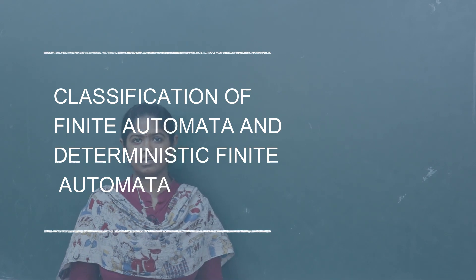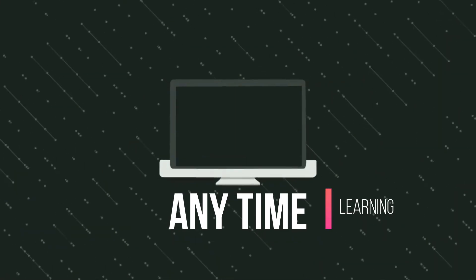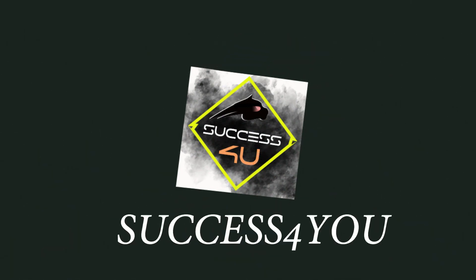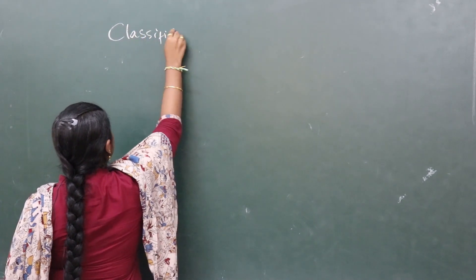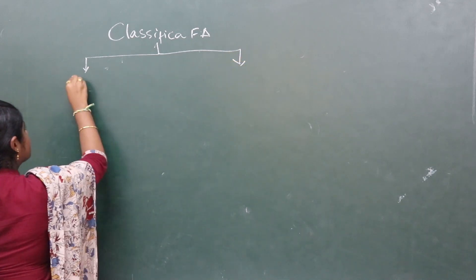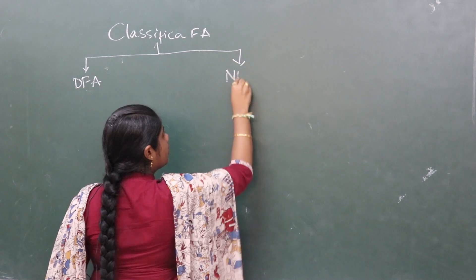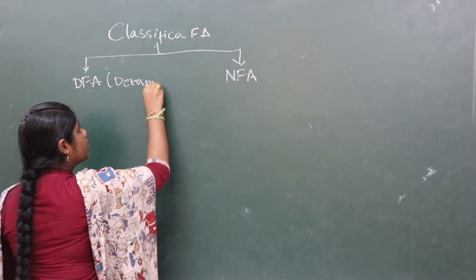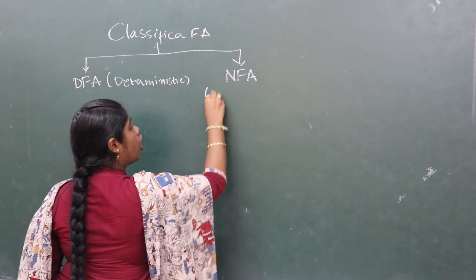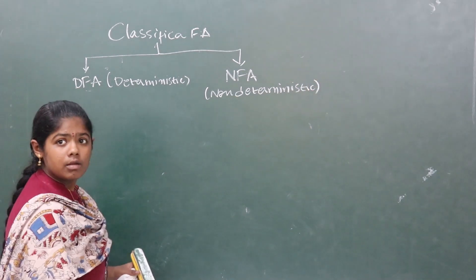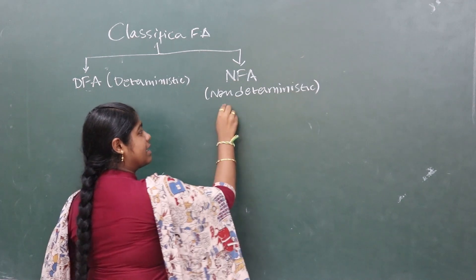The topic discussed in this video is classification of finite automata and deterministic finite automata. Classification of finite automata: we will divide it into two types - deterministic finite automata and non-deterministic finite automata. We will discuss non-deterministic finite automata in the next video.